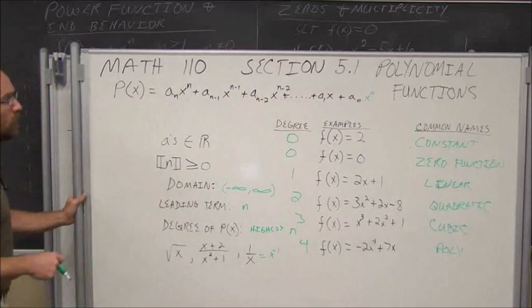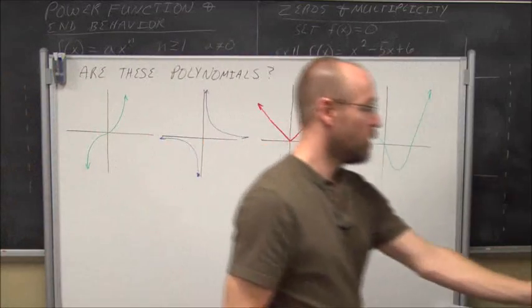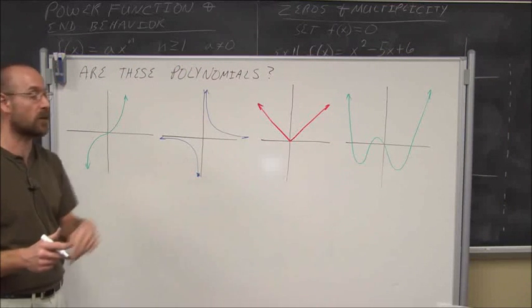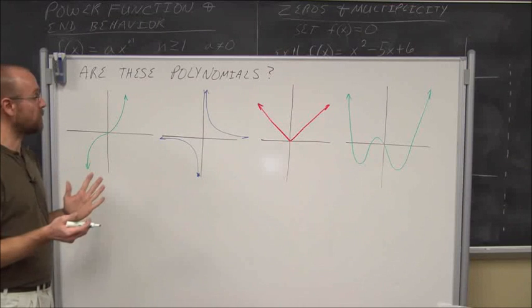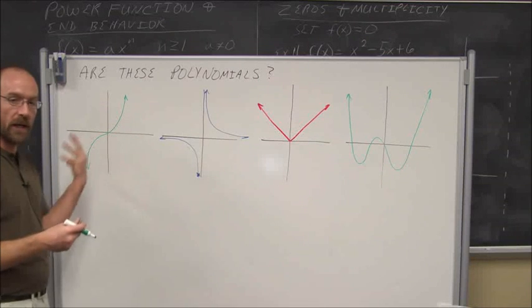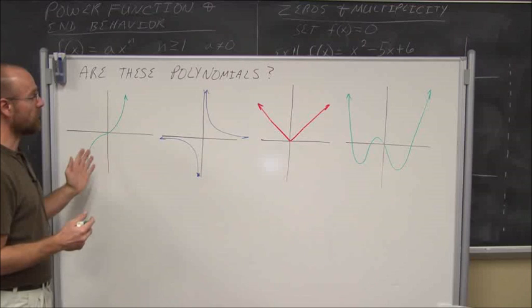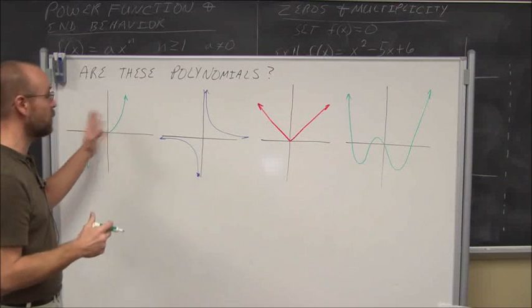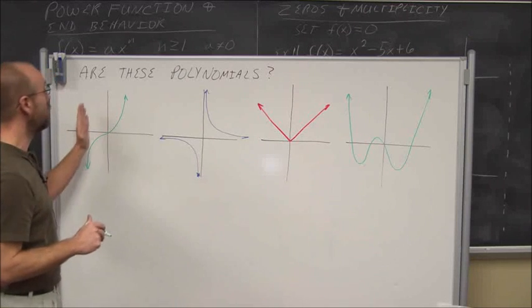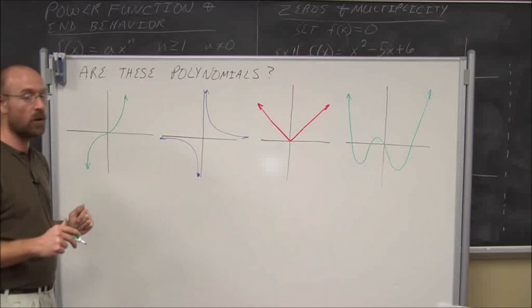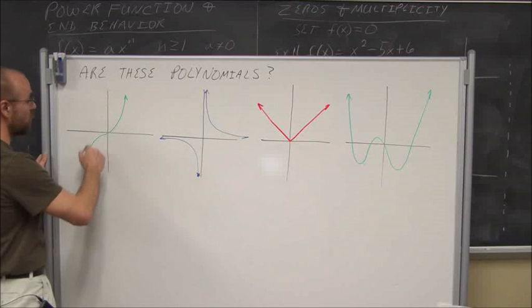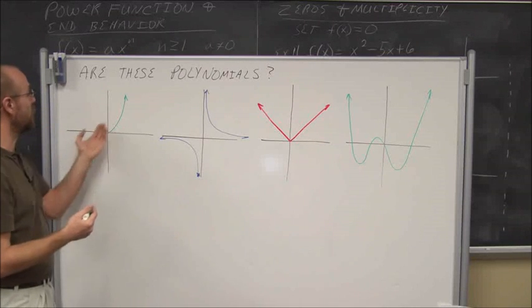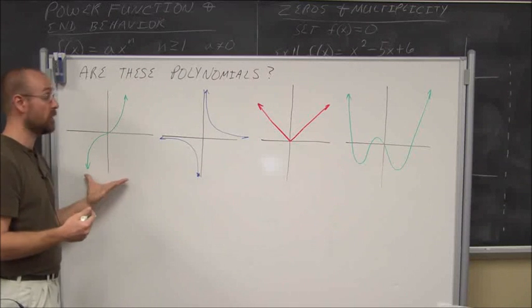Let's see what we can determine about polynomials. In order to be a polynomial function, it has to be a nice smooth graph with no domain restrictions. If it has no domain restrictions, that means infinite values of x from negative infinity to positive infinity are within our domain. A smooth graph means no sharp turns and no areas where you'd have to lift your pencil off the surface to continue drawing.